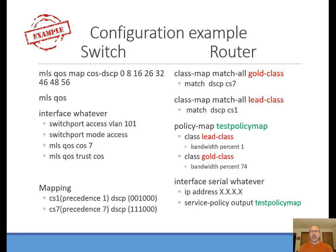Here are a couple of class map examples. I've defined a gold class and a lead class and mapped them to specific DSCP values — that's the labeling and classification. In the policy map, the lead class — the lousy service class — gets 1% of the bandwidth, while the gold class gets 74% of the bandwidth. But nothing is actually happening yet until we go down to a serial interface, like a T-carrier or any other interface, and apply the service policy in a particular direction. That puts the whole thing together.